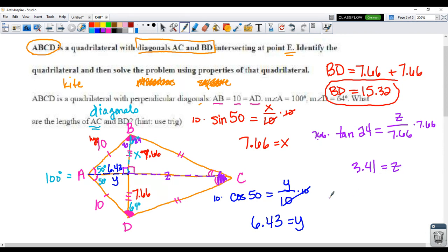So if I'm going to find the length of AC, I take 6.43 and I add it to 3.41. So 3.41 plus 6.43 is 9.84. So that's the length of my other diagonal.